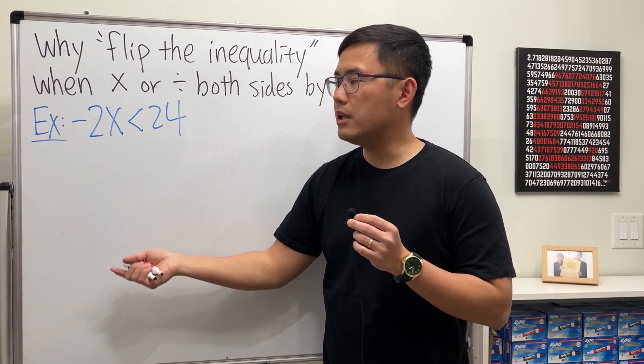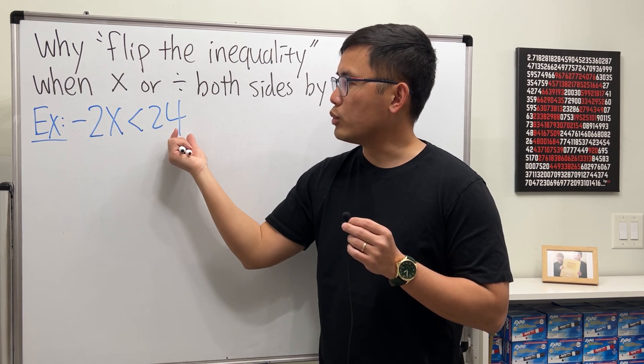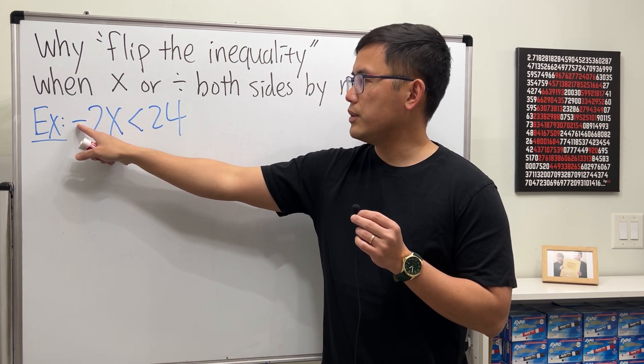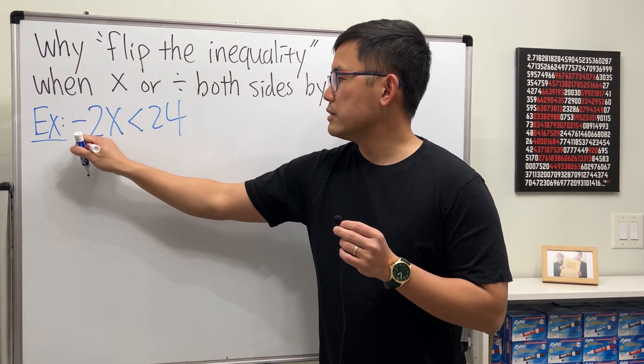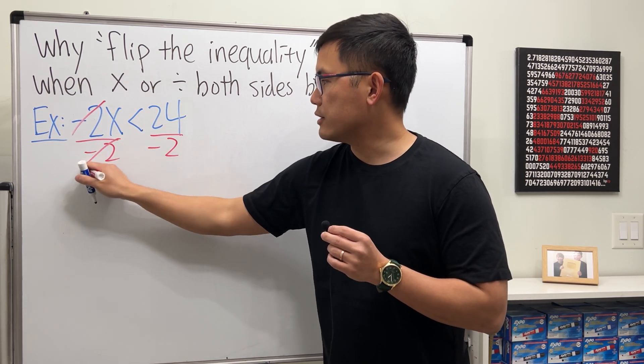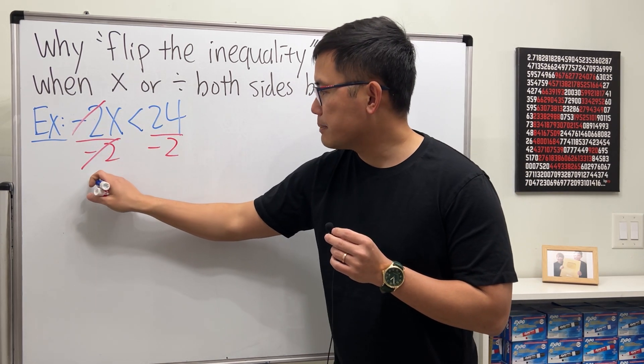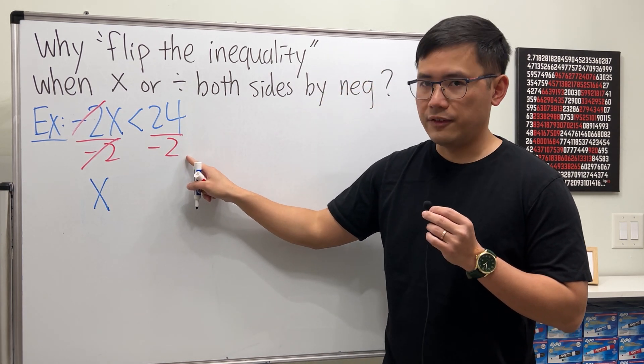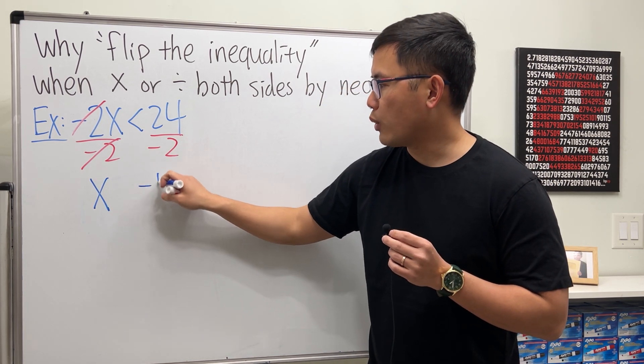The first step will be divide the negative 2 on both sides because this is negative 2 times x. So let's go ahead and do that. That way this and that can cancel and we get the x by itself. And then 24 divided by negative 2 is negative 12.